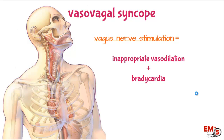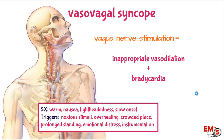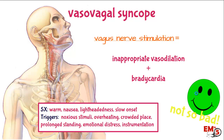The nice thing with vasovagal patients is they'll have a very similar story. They'll describe a typical prodrome: getting warm, flushed, really nauseous, lightheaded, with blackout or tunnel vision — a slow onset where they can feel it coming. There's usually some trigger like a noxious stimulus — standing for a long period in a crowded place, getting overheated, or some kind of instrumentation. We've all had a patient almost pass out when you start an IV. With a good history you can make this diagnosis, and overall it's not that serious as long as they didn't hurt themselves when they fell.